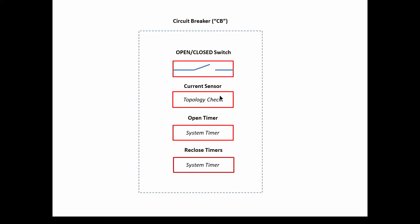How do we implement each of these methods? In the real world, the current sensor senses electrical current, but in the software world there is no electrical current. So we have to figure out a way to determine if, in a certain configuration, the current sensor would sense a fault. We need to make a topology check that uses data from the rest of the devices — for example, if this device is closed and that device is closed and the fault is here, then this circuit breaker will sense it.